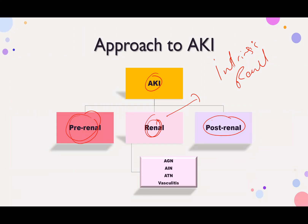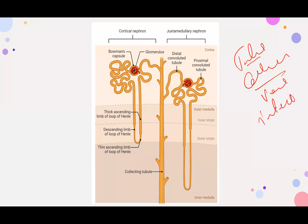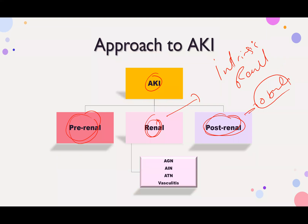What do you have in the kidneys? In the kidneys you have tubules, glomeruli, blood vessels, and interstitium. These are the tubules; these are the blood vessels; the interstitium lies between the tubules and blood vessels; and that indicates the glomerulus.